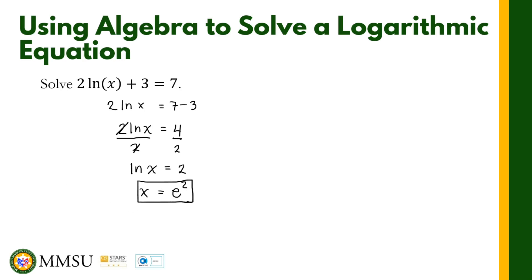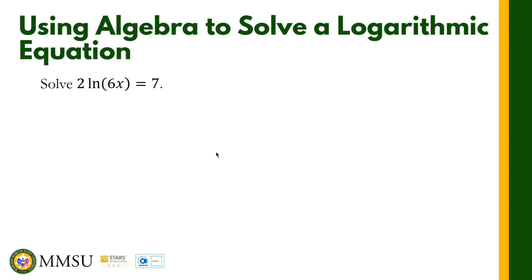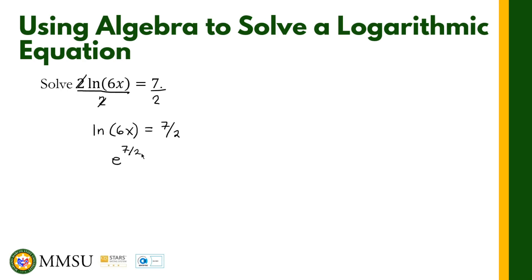Let us solve one more problem. We are given 2 ln(6x) equals 7. Just like before, we divide by the coefficient 2, giving us ln(6x) equals 7/2. Since the natural logarithm has base E, we can write this in exponential form as E raised to 7/2 equals 6x. We solve for x by dividing both sides by 6, giving x equals E raised to 7/2 divided by 6.